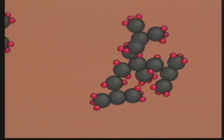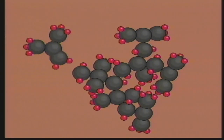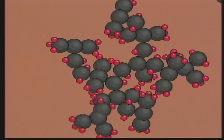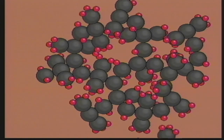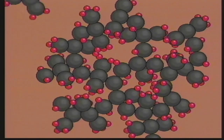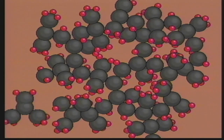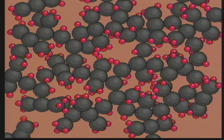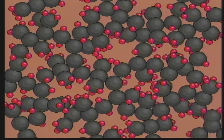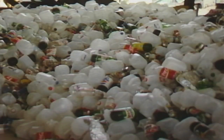Polymers consist of many small molecules called monomers. Monomers combine together in sheets, chains, or rings to form larger polymer molecules. Plastics are good examples of polymers.